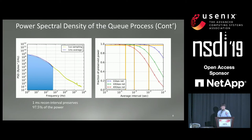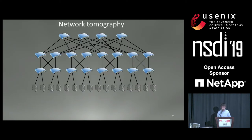The ideal averaging interval is inversely proportional to the link speed of the network. Intuitively, if you have higher-speed links, the queues will vary faster, and you will want to reconstruct the queues more frequently. In our system, we call this averaging interval our reconstruction interval. We reconstruct the queue sizes reconstruction interval by reconstruction interval, and in each interval we try to reconstruct the average queuing delays in the queues.